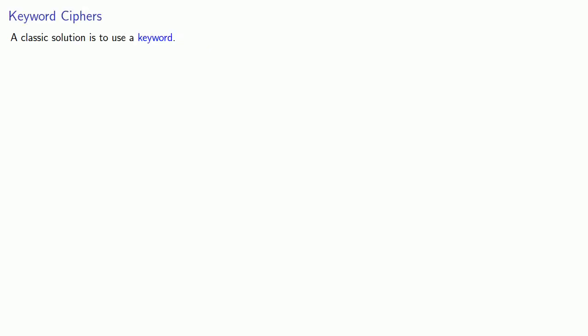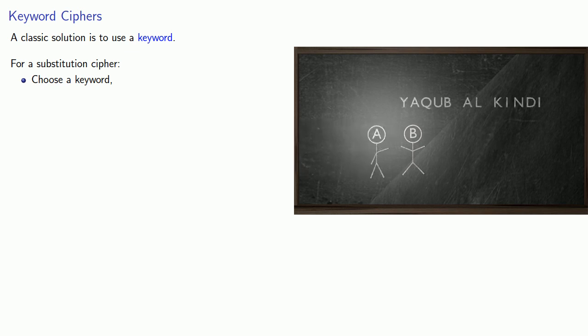A classic solution is to use a keyword. For a substitution cipher, we'll choose a keyword and communicate it. The important thing is that because the keyword is short but memorable, it doesn't have to be written down, and Eve can't look into Bob's head to find the keyword.